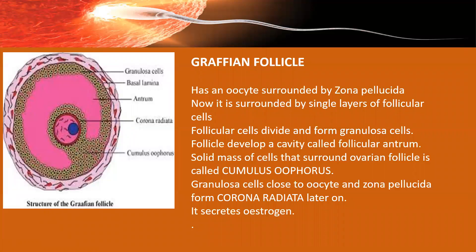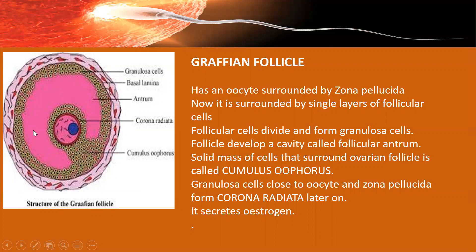The Graafian follicle has many layers of follicle cells called granulosa cells. Inside is a cavity called the antrum, which contains a fluid called liquor folliculi. Inside the antrum, the secondary oocyte surrounded by many cells floats in this fluid. The cells surrounding the secondary oocyte are called corona radiata, and inside the corona radiata there is a dark layer called zona pellucida. This secondary oocyte is attached to the outer granulosa cells by a group of cells called cumulus oophorus.